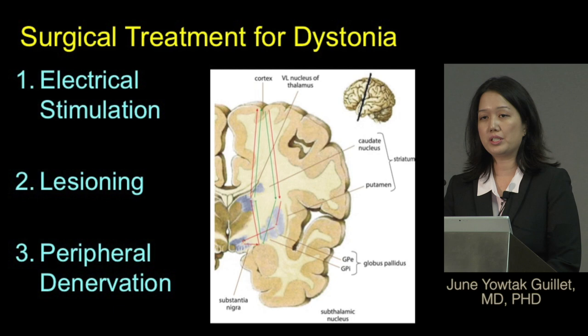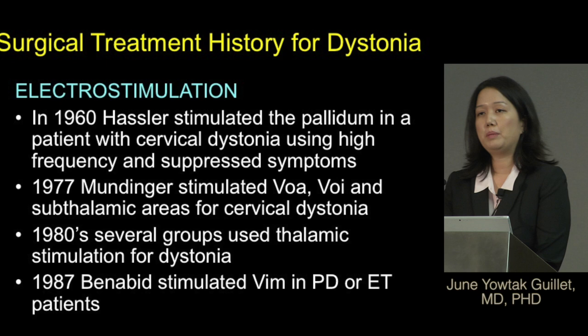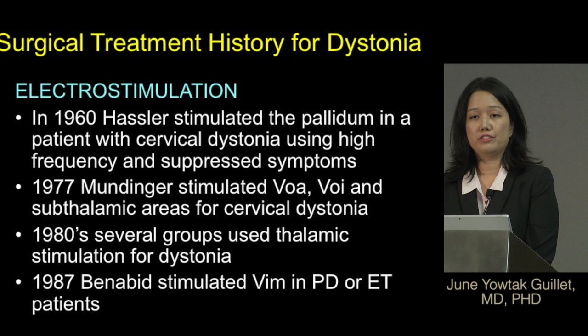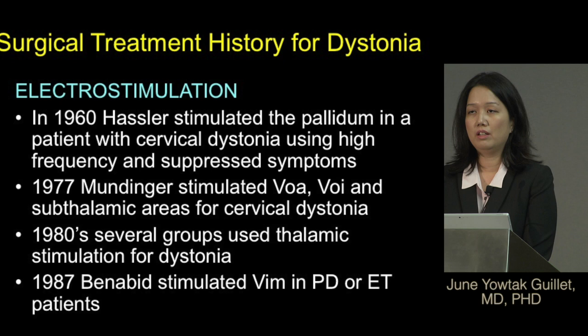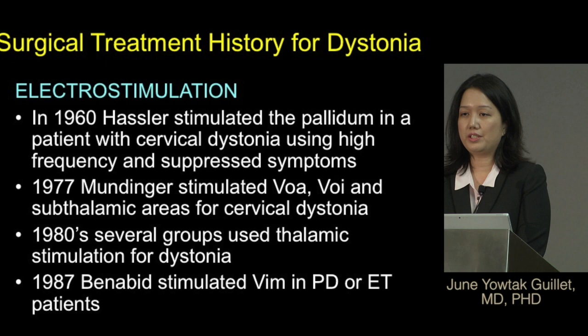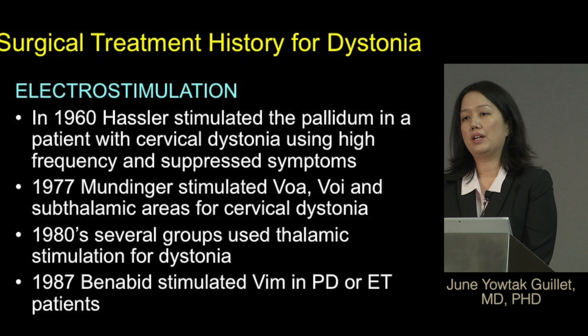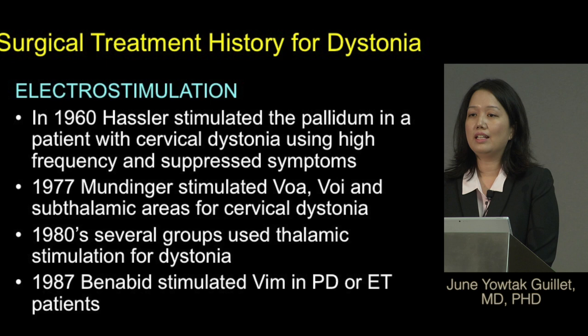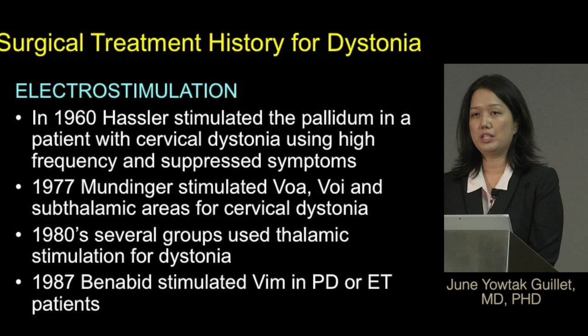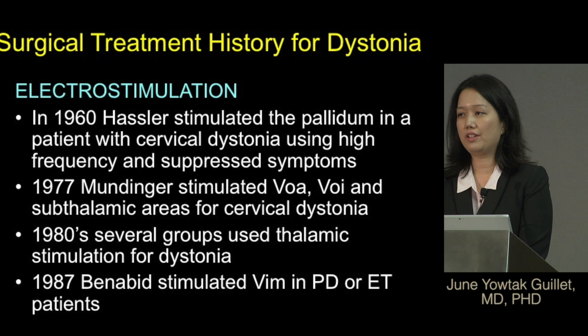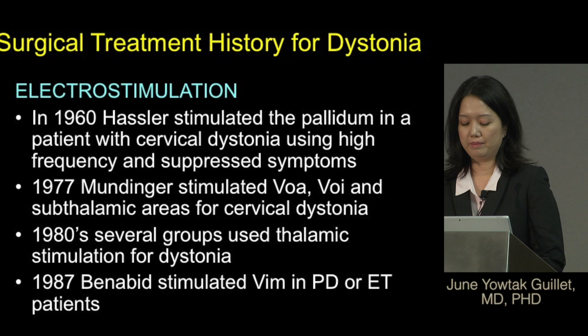Today we'll focus mostly on electrical stimulation. Back in 1960, Dr. Hassler first stimulated the globus pallidus in a patient with cervical dystonia using high frequency and found that this suppressed symptoms. Mundinger in 1977 stimulated areas of the thalamus as well as the subthalamic nucleus to treat cervical dystonia. This continued into the 1980s with several groups looking at thalamic stimulation, and in 1987 Dr. Benabid was credited with heralding the era of deep brain stimulation, using stimulation in the VIM nucleus of the thalamus to treat Parkinson's and essential tremor patients.